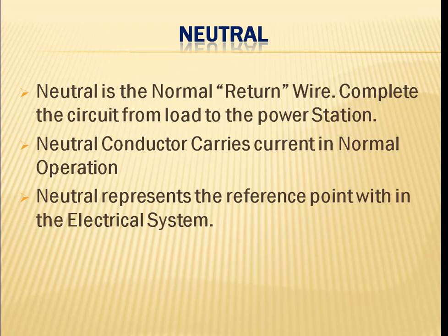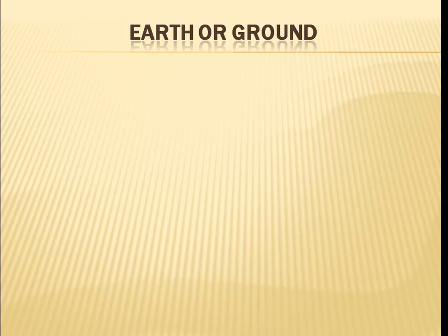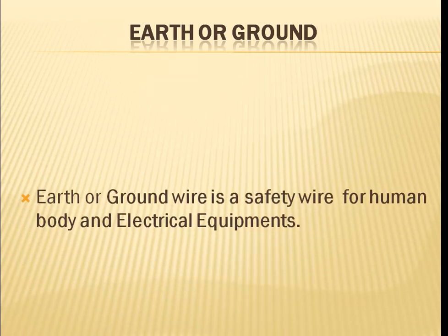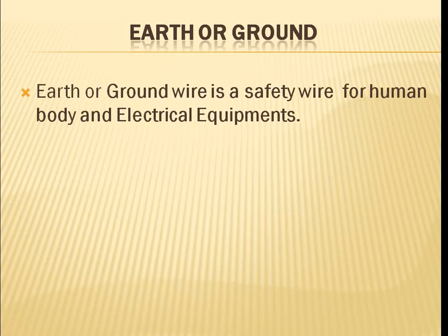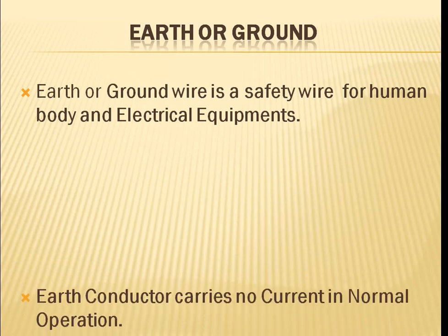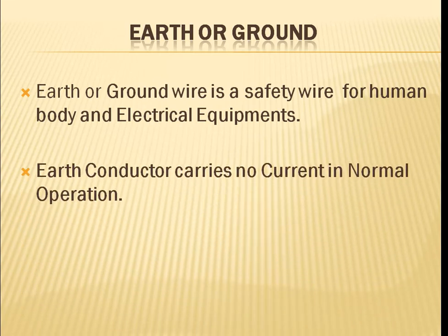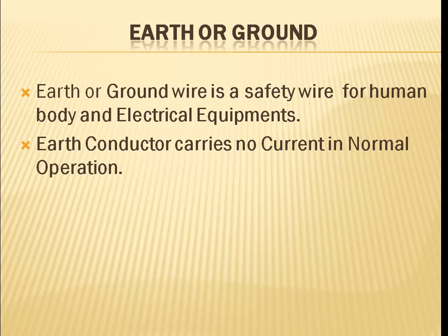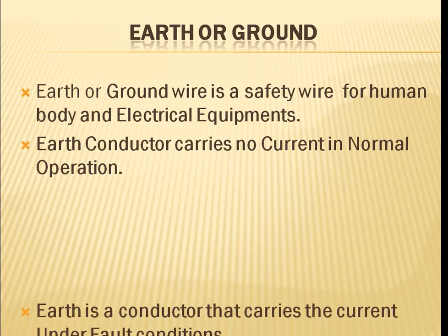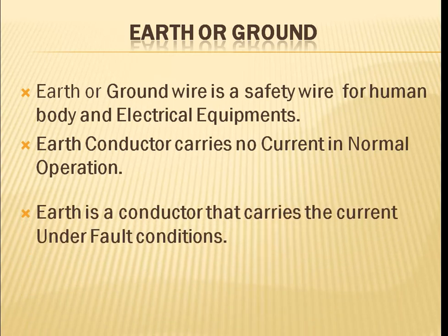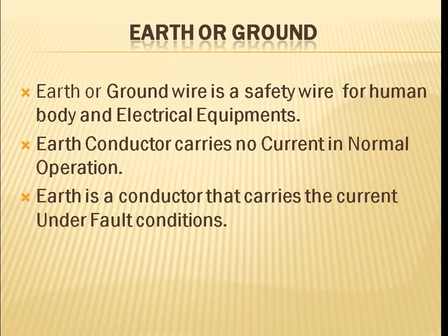Now I will tell you about the earth wire. Earth is a protective wire used for safety and protection. In normal condition, the earth conductor does not carry current. In abnormal condition, when a fault occurs in our system, the earth conductor carries current, which is basically used for safety — safety for the human body and safety for equipment.